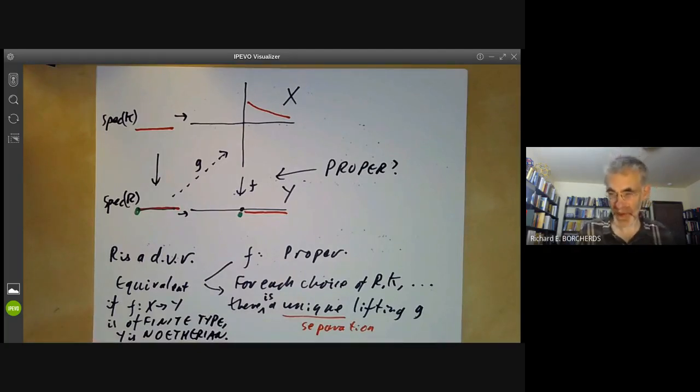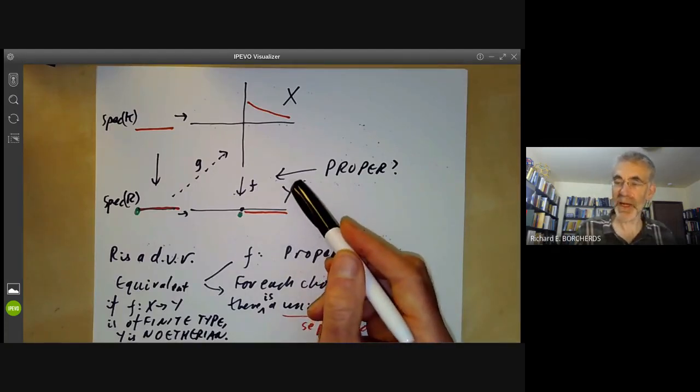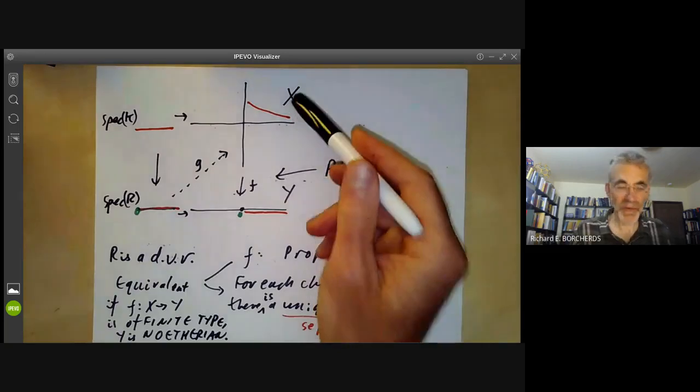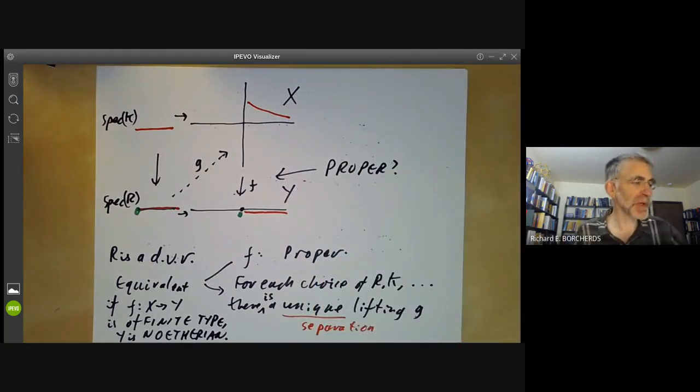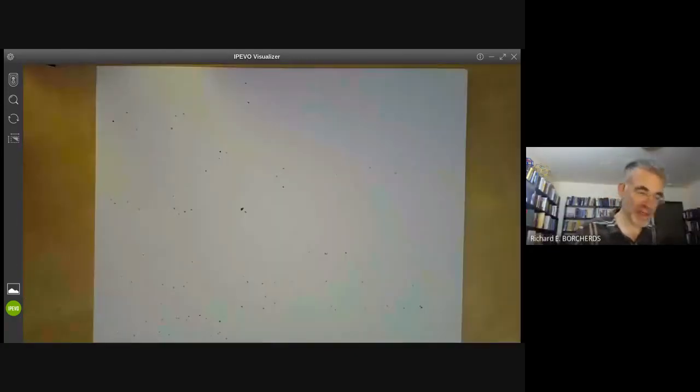As before, this is slightly different from the version in Hartshorne's book. Hartshorne has a condition not for discrete valuation rings, but for all valuation rings, and as a result is able to state the equivalence for a slightly more general type of map from X to Y. As usual, it's a matter of preference which version you use. As before, I'm not going to prove this result, but I'm just going to give some examples of how to use it.